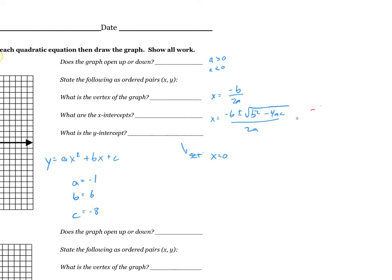Negative b is 6 plus or minus the square root of 6 squared minus 4 times a is negative 1. Let me make sure you can see that negative 1 times c is negative 8. And that is all over 2 times negative 1.